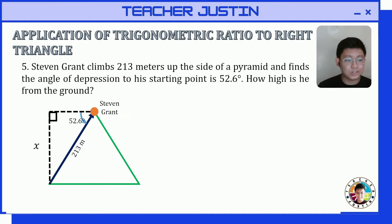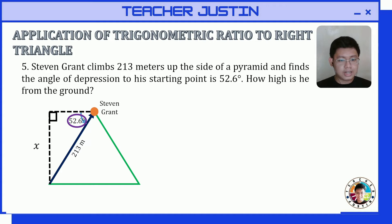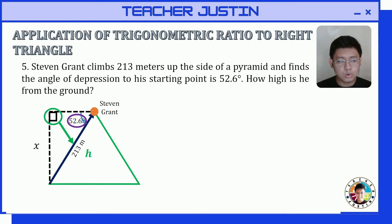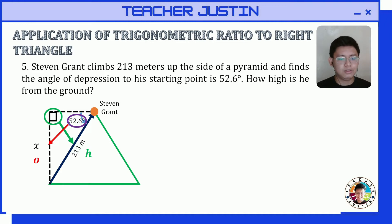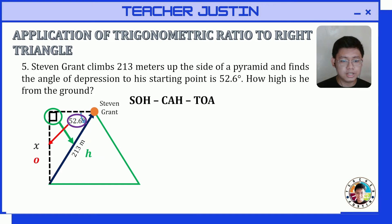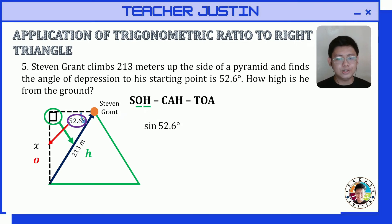Let's identify the given parts. The angle of depression is inside the right triangle, so no additional computation is needed — our angle is 52.6 degrees. The hypotenuse is 213 meters, and we're looking for the opposite side, which is the height x. Since we have opposite and hypotenuse, we use sine.